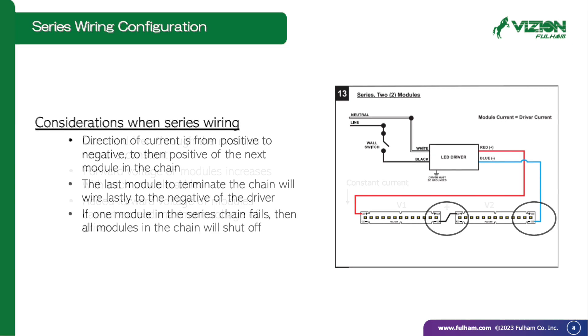Wiring will be done from positive of the driver output to positive of the first module in the chain, then negative from the first module to the positive of the second. This chain will continue until the last module, in which the negative of that module will return to the negative of the driver.